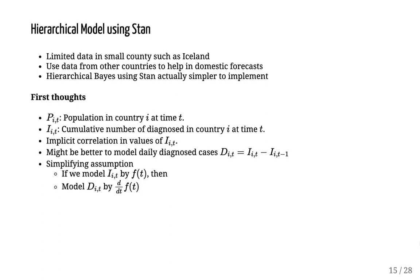So our first thoughts in modeling: let's say that P is the population in country i at time t and that capital I is the cumulative number of diagnosed cases in that country at that time. We might want to model the cumulative number of cases using, for example, the Richards growth curve, but there is a lot of implicit correlation in the values of I_it. It's probably better to model the daily diagnosed cases, which are just a daily difference. But by a simplifying assumption, if we want to model capital I by the Richards growth curve, then we can model the D_it, the daily diagnosed cases, using the derivative of the growth curve.